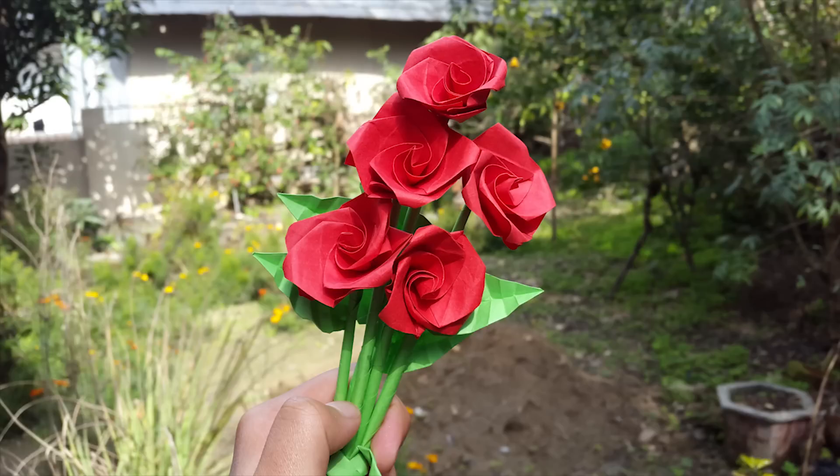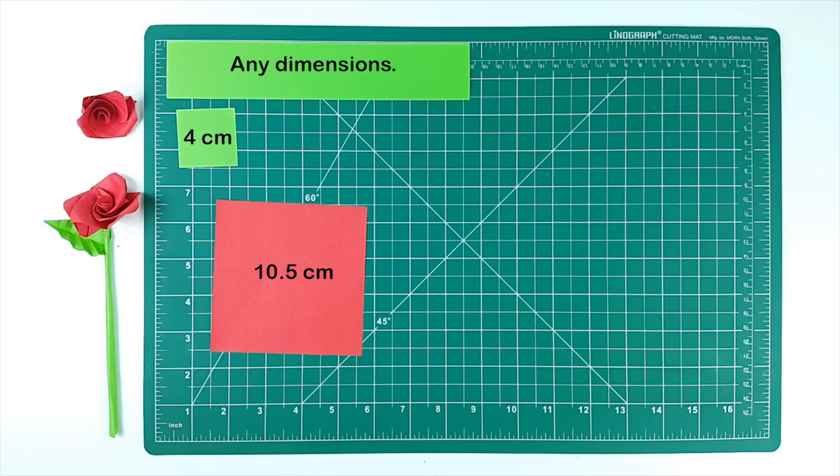We will need 3 paper pieces for one rose. A 10.5 cm red colored square piece for the rose. You can get 4 of these from an A4 sheet. That's why it is 10.5 cm. A 4 cm green paper piece for the leaf. And a strip of green paper for the stem. It can be of any dimensions depending on how long or short you want your stem to be.